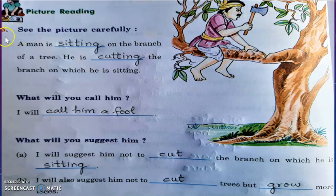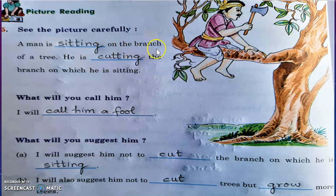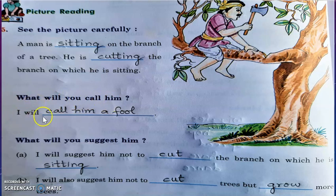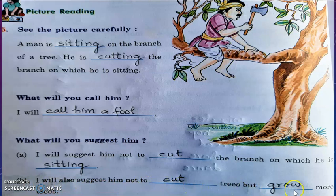Next, question number 5: See the picture carefully. Look at this picture — a man is sitting on the branch of a tree and is cutting the branch on which he is sitting. What will you call him? We will call him a fool, because he is cutting the branch on which he is sitting. I will suggest him not to cut that branch, and also to not cut trees but grow more trees.